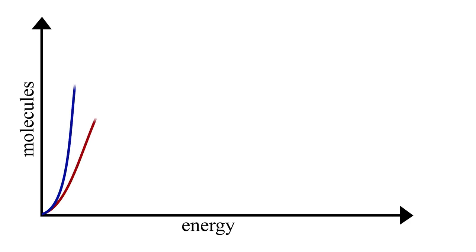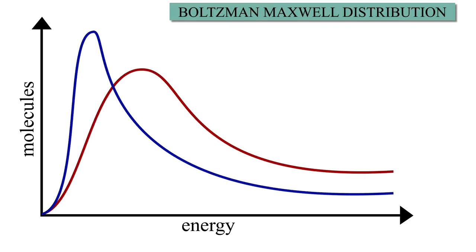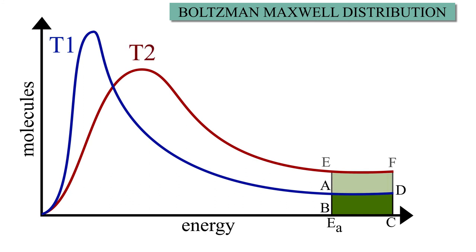As we can see in the graphical representation, at different temperatures, the number of molecules which possess different energy levels varies. At temperature T1, we have fewer molecules with a high energy state, shown by area A, B, C, D, than at temperature T2, shown by area B, E, F, C. This illustrates how entropy change in energy takes place.